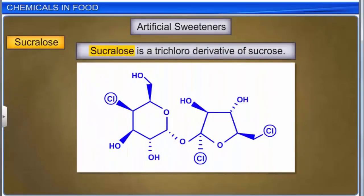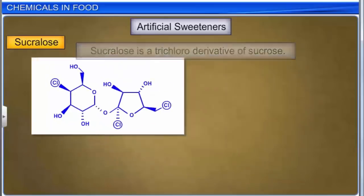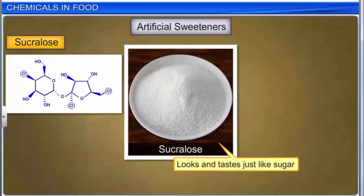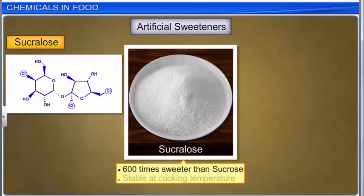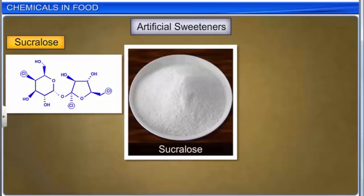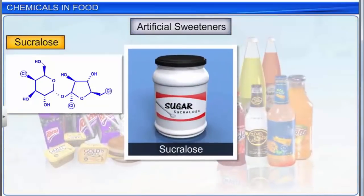Sucralose is a trichloro derivative of sucrose and a zero-calorie artificial sweetener which looks and tastes just like sugar. Sucralose is approximately 600 times sweeter than sucrose and is stable at cooking temperature. It is a very versatile sweetener used in a wide variety of foods and beverages.